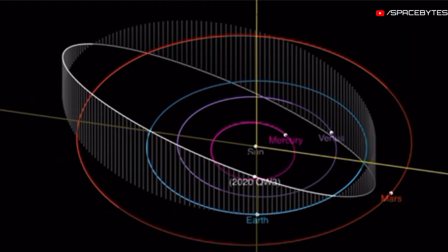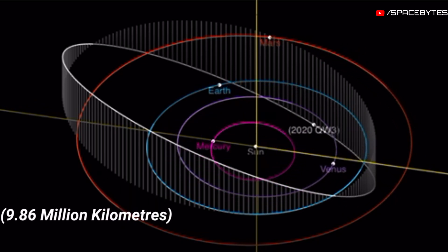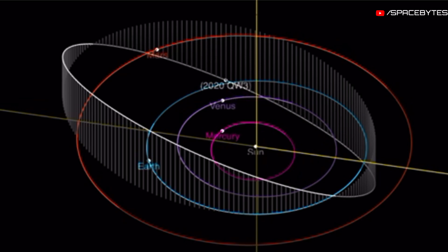The distance of asteroid 2020 QW3 from Earth is currently 9.86 million kilometers, equivalent to 0.07 astronomical units. Light takes 32 seconds to travel from the asteroid to us.